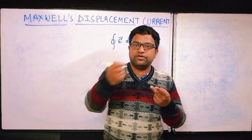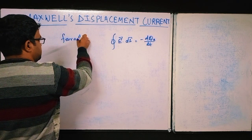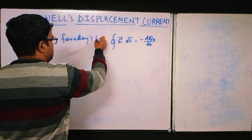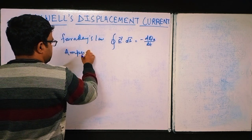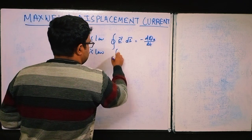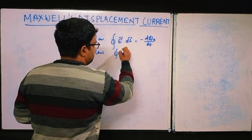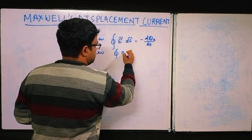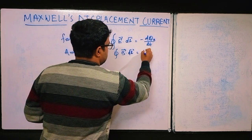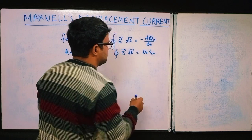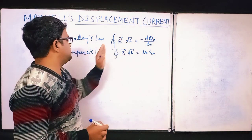Ampere's law states that the magnetic field — written as the closed integral of B·dl — equals μ₀ times the enclosed current, i_enclosed. So this was Ampere's law and this was Faraday's law.